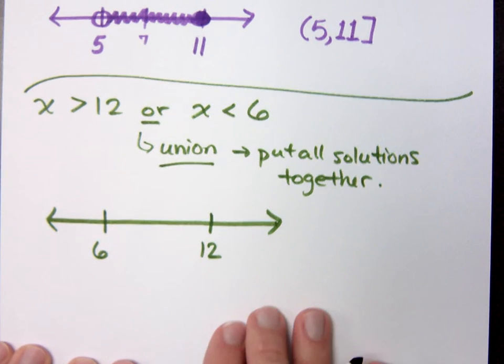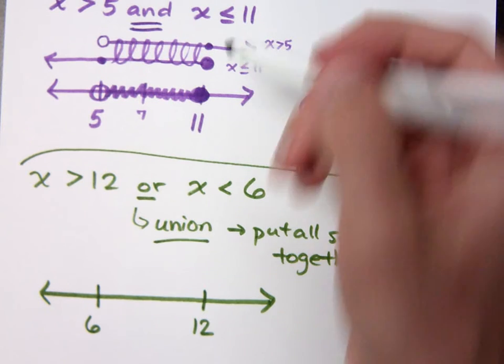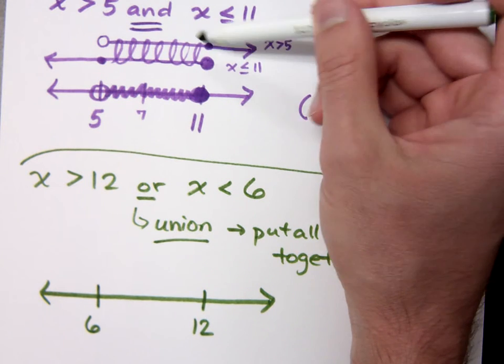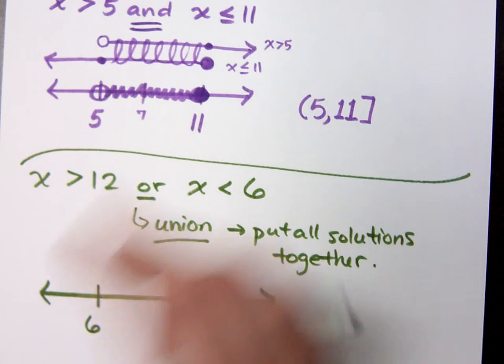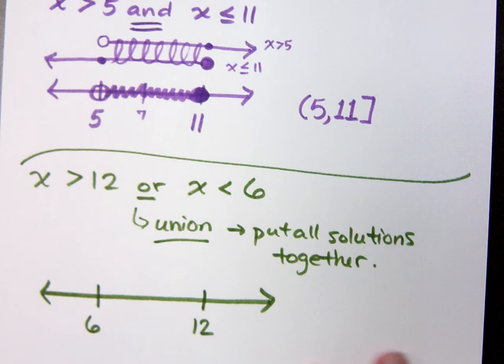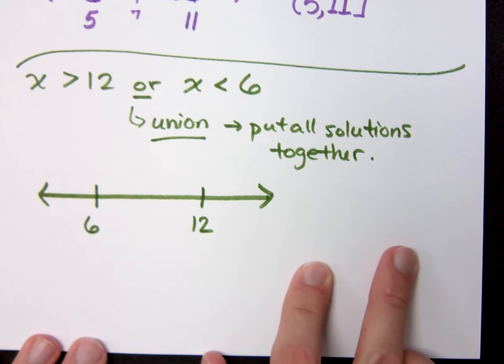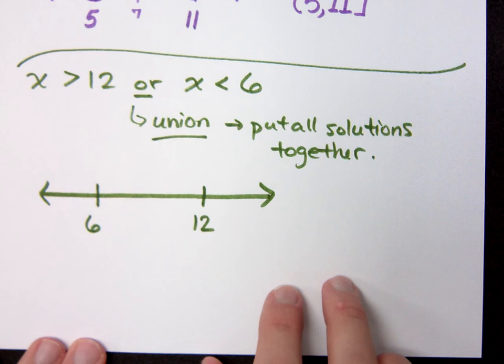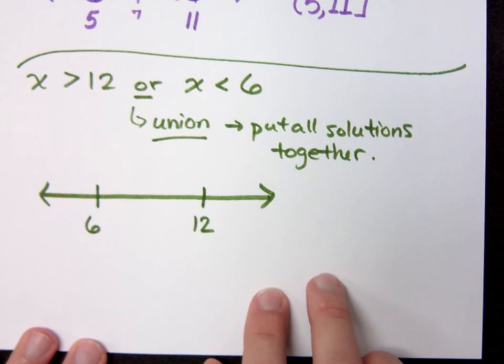So grab each of these guys. And here I don't need to do anything like I did with the 'and' where I have these guys sketched out above. I can put everything together on one number line and then describe what I see.